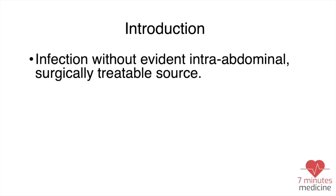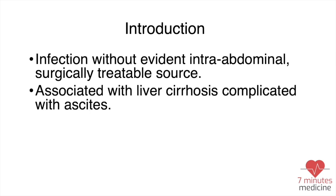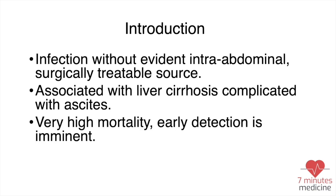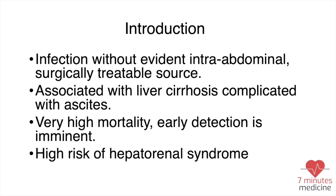What's the definition of SBP? It is an infection without an evident intra-abdominal surgically treatable source. If you have evidence of gut perforation or appendicitis, this is most likely secondary bacterial peritonitis and not SBP. SBP is associated with liver cirrhosis complicated with ascites. It has very high mortality, so early detection is very important. It also carries a high risk for hepatorenal syndrome.